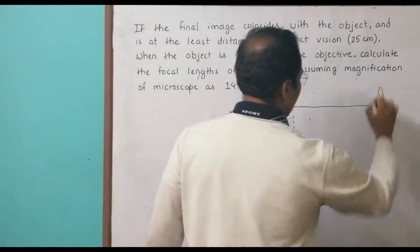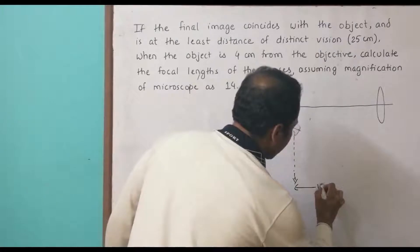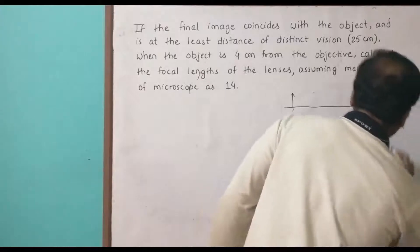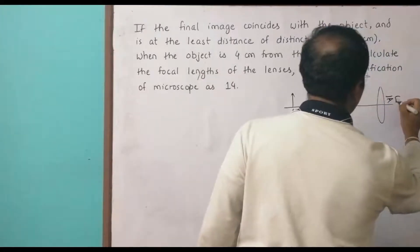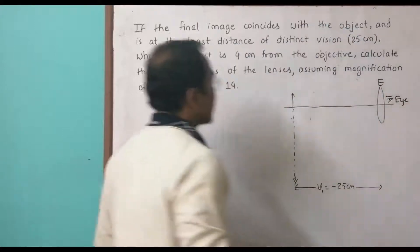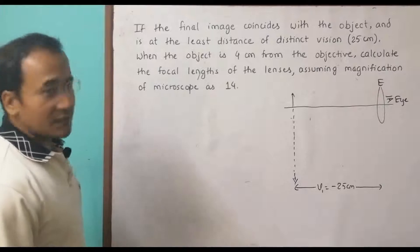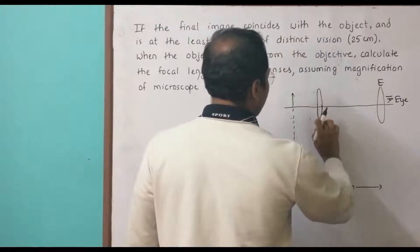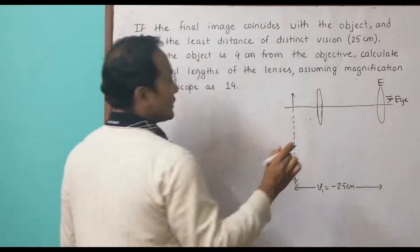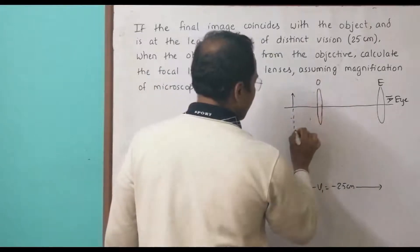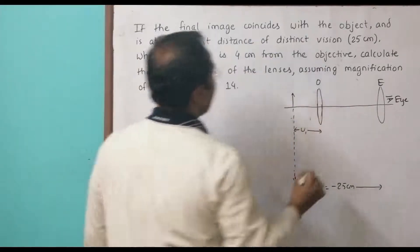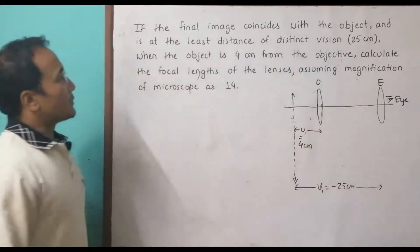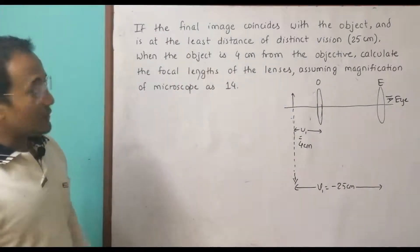So let's say this is the eyepiece lens. The image distance V2 equals minus 25 centimeters from this lens, and the eye is positioned beyond it. When the object is 4 cm from the objective lens, we need to calculate the focal lengths of the lenses.